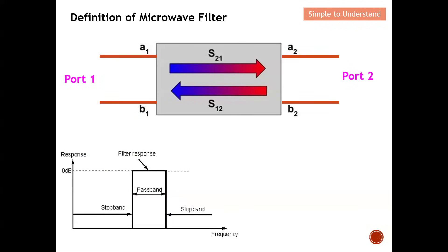Let's take a closer look at how a filter actually works. Imagine this is a filter with an input port and an output port. For example, a desired frequency will be able to travel from port 1 to port 2 — this is the passband. For the stopband, an undesired frequency will not be able to pass to port 2. So the input port has a range of frequencies, but at port 2 only the desired frequency appears — the undesired frequencies are rejected by the filter.